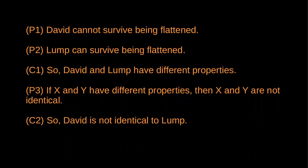More formally: premise one, David cannot survive being flattened; premise two, Lump can survive being flattened. That leads to the conclusion that David and Lump have different modal properties. Then premise three: if X and Y have different properties, then X and Y are not identical. This is the highly intuitive principle of indiscernibility of identicals — if two things are identical, they are one and the same, so they must have the same properties. All of this leads to the conclusion that David is not identical to Lump, which is a bit strange because it seemed like we had just one object there. But this conclusion is telling us that actually there are at least two objects there.